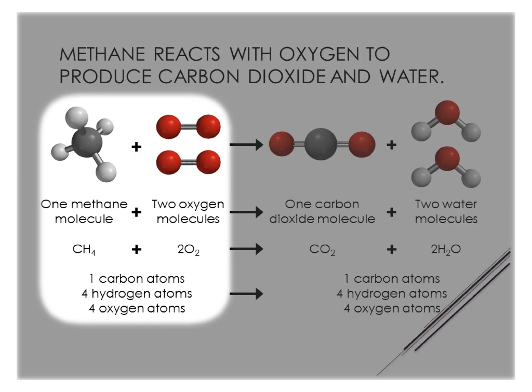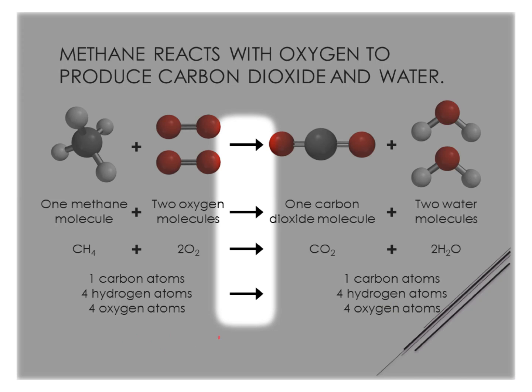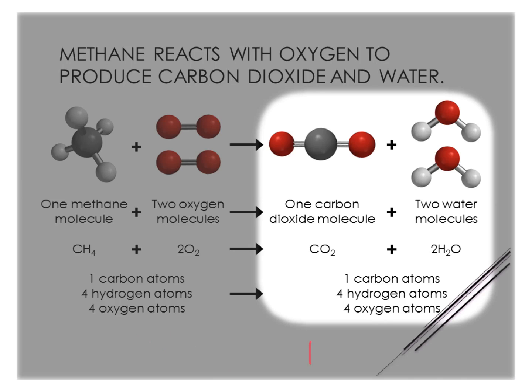Here we're representing the number of atoms of each type of element on each side of the equation. We want to identify all of the components. Everything on the left side of the arrow is considered a reactant. The arrow means 'to yield,' so reactants yield products. Everything written on the right side is a product. So we have reactants yield products.